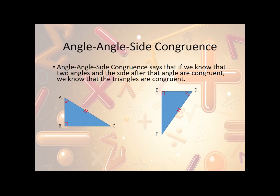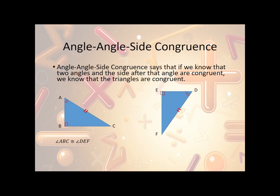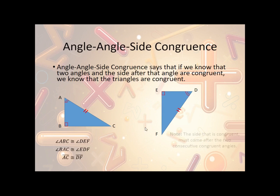Now let's take a look at angle-angle-side congruence. This says that if we know two angles and then the side after those two angles, then we know the triangles are congruent. So angle ABC is congruent to angle DEF, angle BAC is congruent to angle EDF, and side AC is congruent to side DF. Therefore, triangle ABC is congruent to triangle DEF using angle-angle-side.